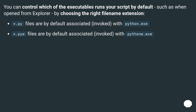You can control which of the executables runs your script by default — such as when opened from Explorer — by choosing the right filename extension. .py files are by default associated and invoked with python.exe. .pyw files are by default associated and invoked with pythonw.exe.